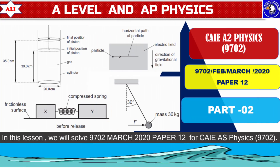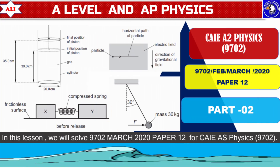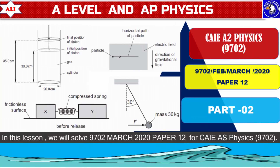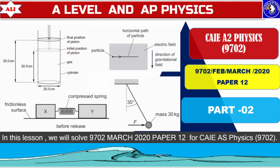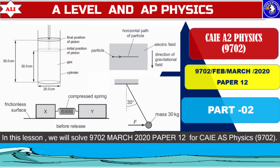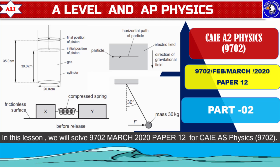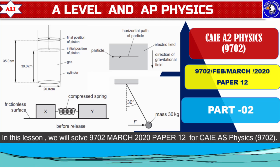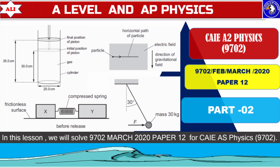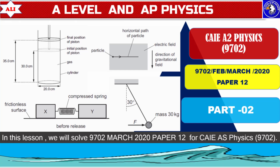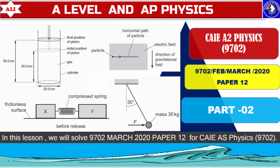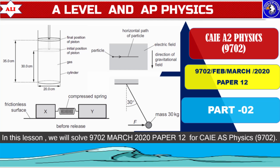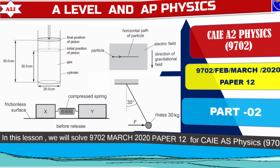Welcome to A-Level and AP Physics. In today's lesson we will discuss important past paper questions from March 2020 paper 1-2. We will discuss these questions in detail so you can have a better understanding of these concepts. We will not only find the best possible option, but also go through incorrect options and explain why those options are not correct.